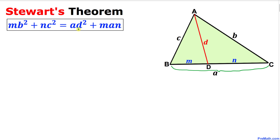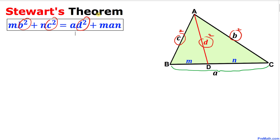Here is Stuart's formula: m·b² + n·c² = ad² + m·a·n. Now let's focus on these line segments — they go up and down, meaning c, d, and b — and as you can see in this formula all of them appear with a square: c², d², and b².